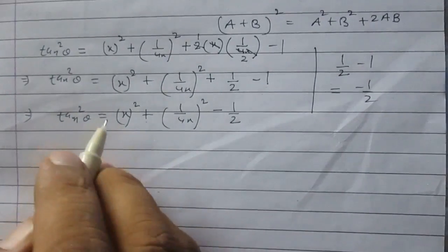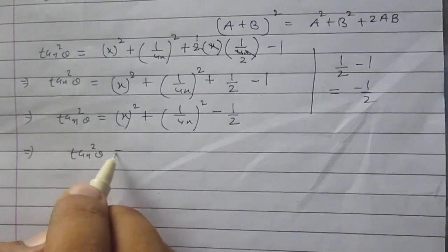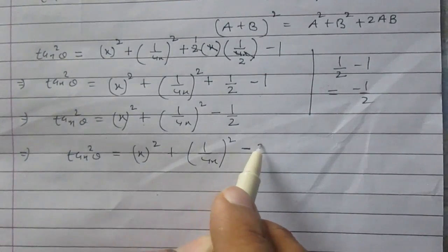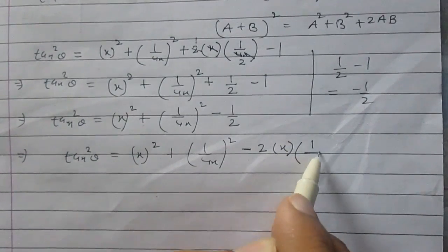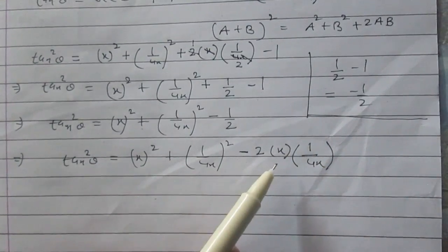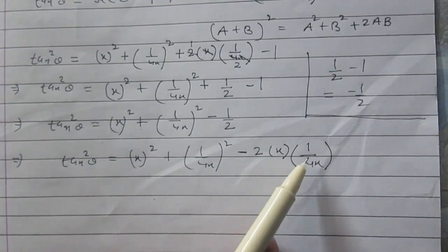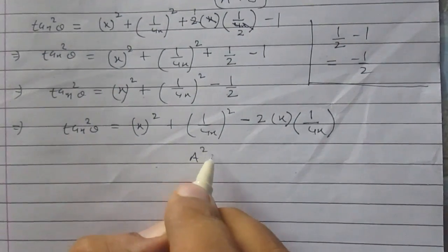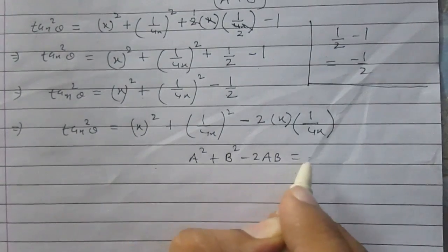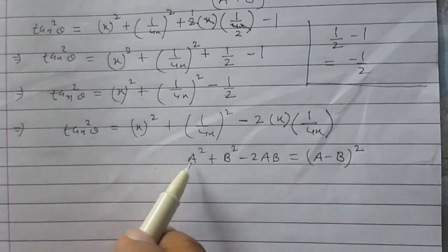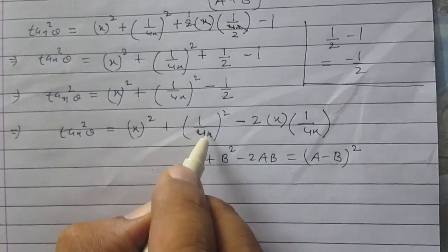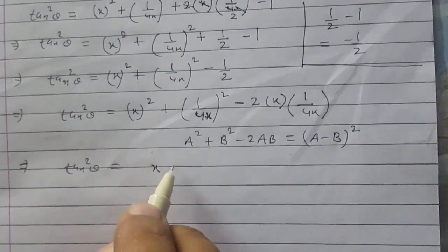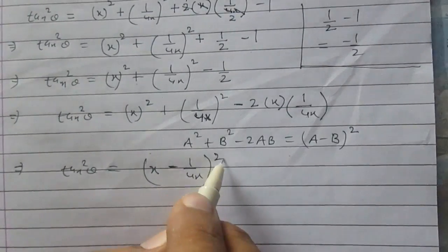Rearranging the terms: tan² θ is equal to x² plus 1 upon 16x² minus 1 by 2. Now minus 1 by 2 can be written as minus twice of x multiplied by 1 upon 4x — you can verify that minus 2x times 1 upon 4x equals minus 1 by 2. Using the identity a² plus b² minus 2ab equals a minus b whole square, with a = x and b = 1 upon 4x, tan² θ equals x minus 1 upon 4x, whole square.